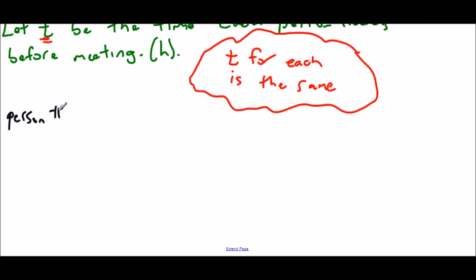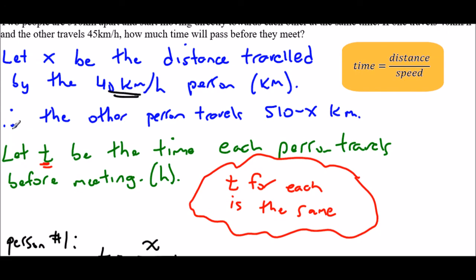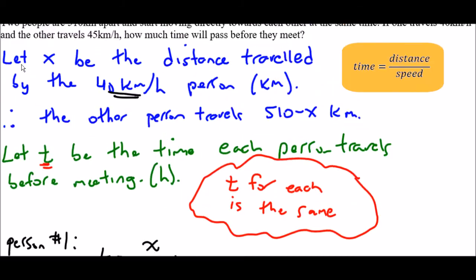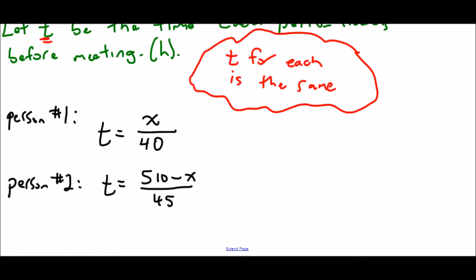So for the first person, here's a formula for them. Time is distance over speed. So time we define to be T, that person's distance was X, and that person is the 40 kilometer per hour person. So that's an equation representing the time it takes for the first person to reach the meeting point. For the second person, we also have T, same time, but their distance is 510 minus X and their speed is 45. So I've now created two equations out of the variables I defined. And again, what's really important, this brain bubble, is that these times are the same.